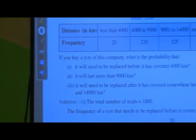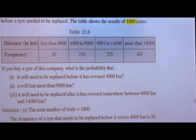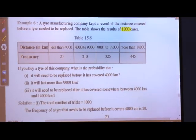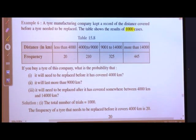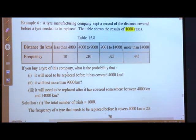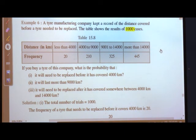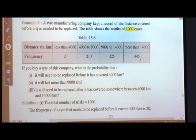Here is the table. The first row is distance in kilometers, the second row is frequency. Less than 4000 km has a frequency of 20; 4000 to 9000 has a frequency of 210; 9001 to 14325 has a frequency of 325; and more than 14445 has a frequency of 445. This is the data that is given to us.